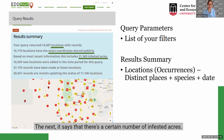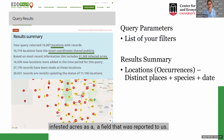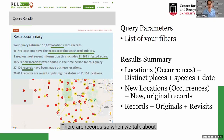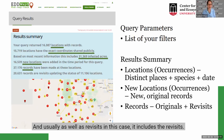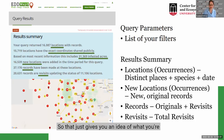The results also show infested acres — this information is only available when we know how many infested acres exist, so it represents a minimum of what we know. New locations refers to records added for a specific time period — those are new original records. Records includes original records as well as revisits. Jerry's County has over 20,000 revisits, which gives you an idea of what you're seeing in that results summary box.